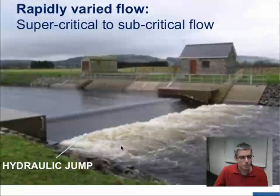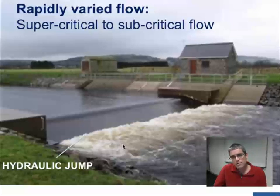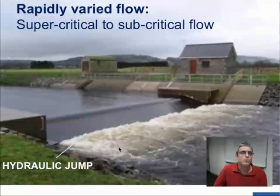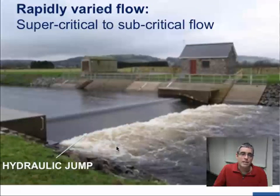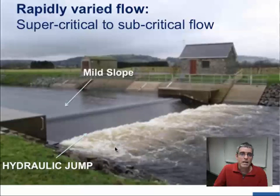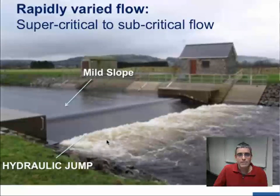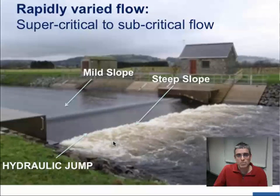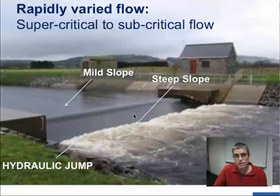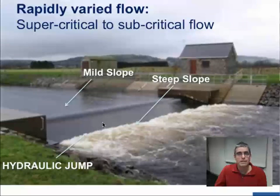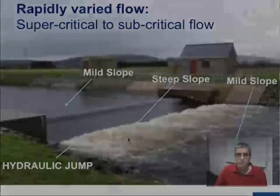I also want to talk about slope, because there are two main types. There's a mild slope and a steep slope. The mild slope is where the normal depth — the depth at uniform flow — is greater than the critical depth. We have a mild slope upstream of this weir. Then we have a steep slope on the downstream face of the weir, where the normal depth at uniform flow is less than the critical depth. And then it returns to a mild slope downstream of the hydraulic jump.